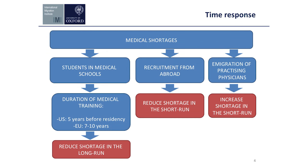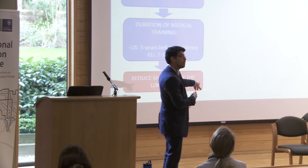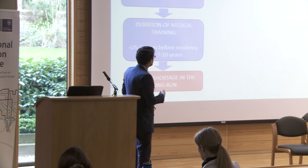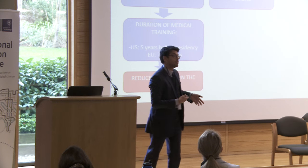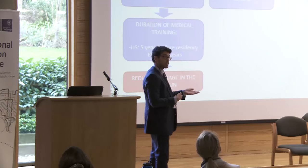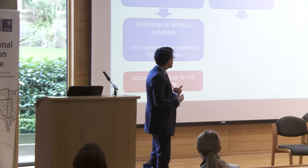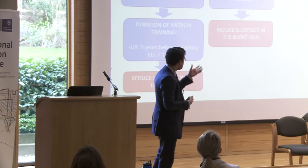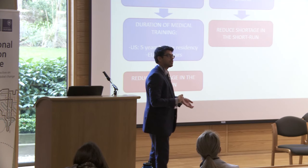When addressing medical shortage by increasing places in medical school, there is a timeliness problem: you need to wait approximately seven to ten years due to the long duration of medical training. So this policy can only address the shortage in the long run. The second policy is recruiting people from abroad who are already trained, meaning we don't need to wait for the training duration, and they can immediately address the shortage of physicians.